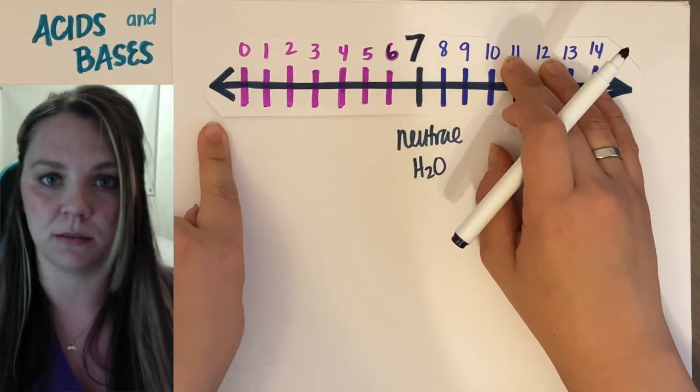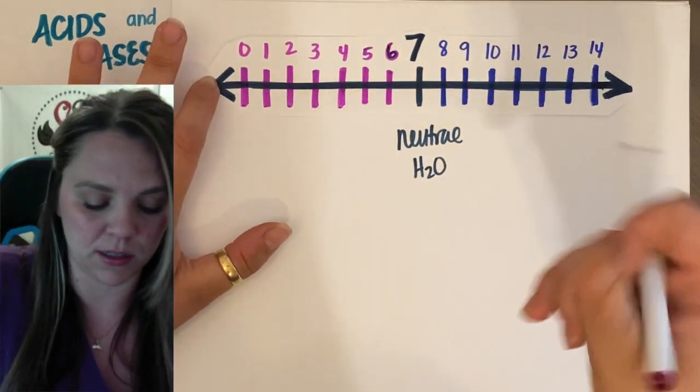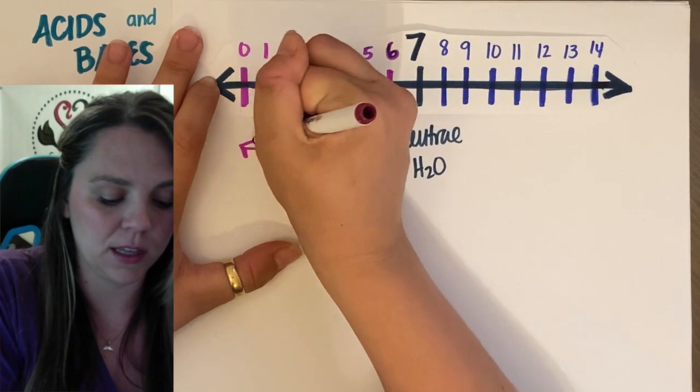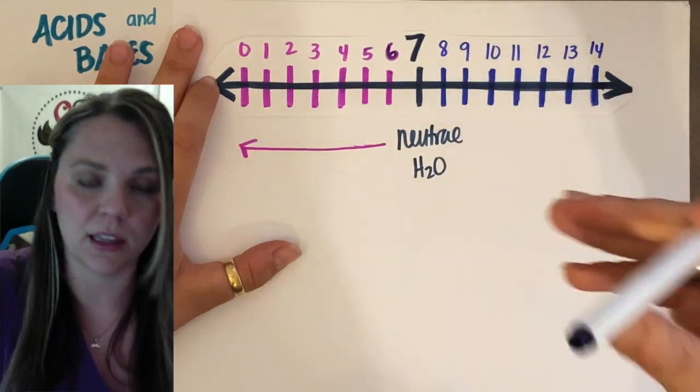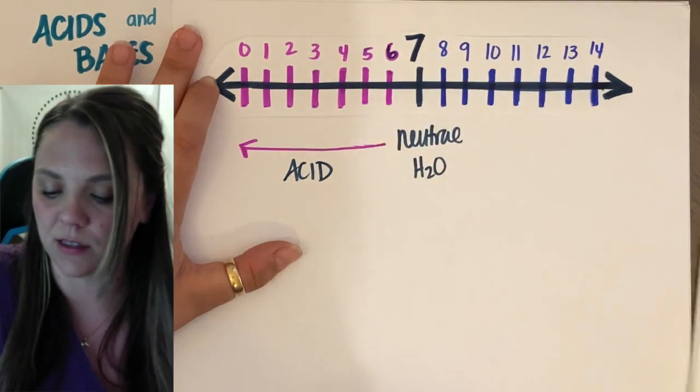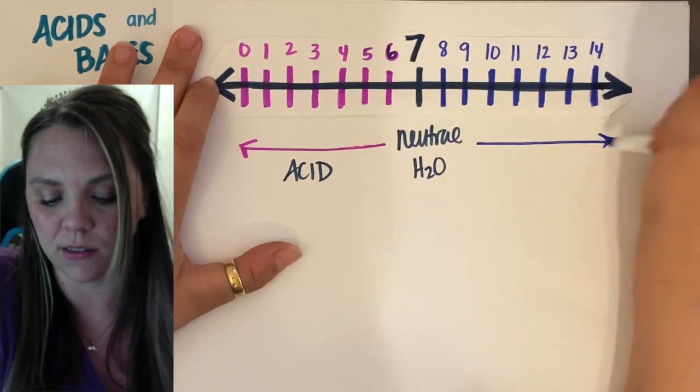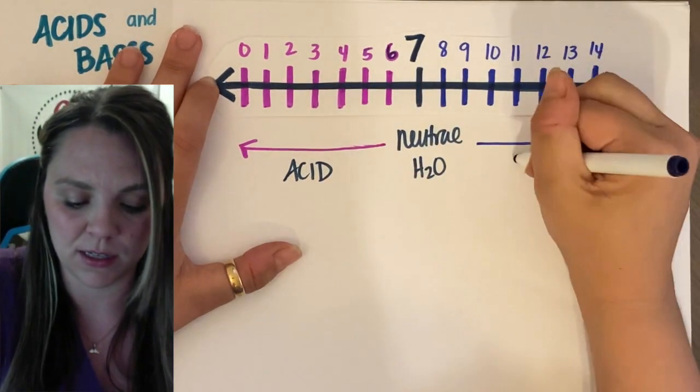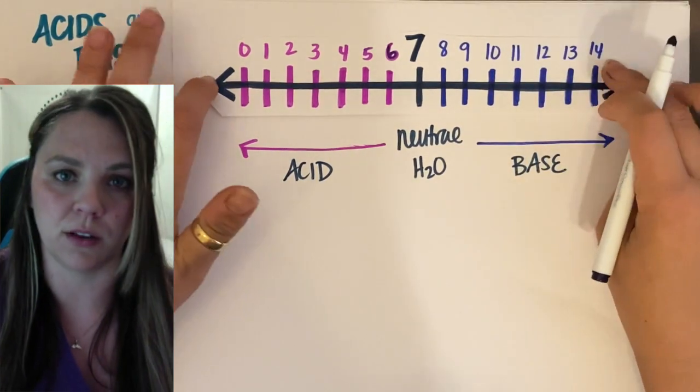Anything that's below 7, anything to the left, anything below 7 is acidic. Anything to the right, anything above 7 is base.